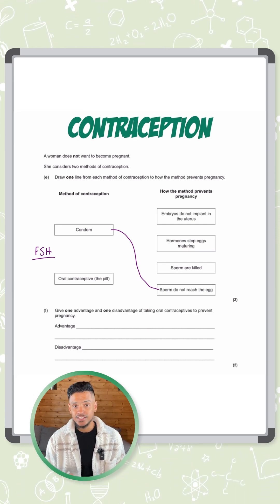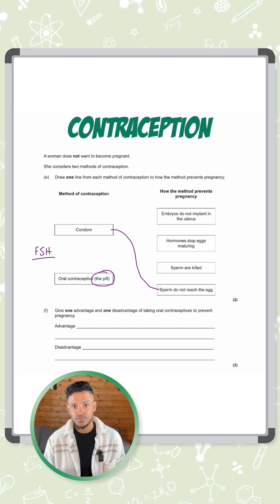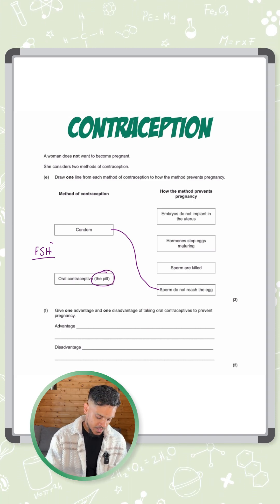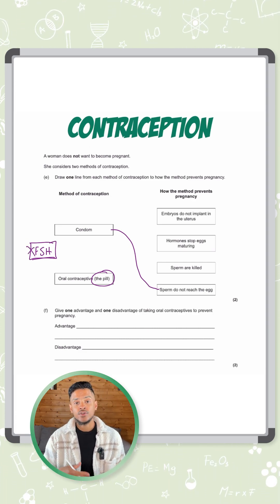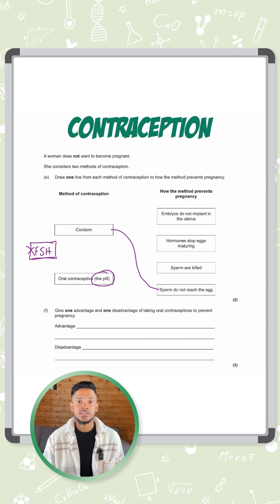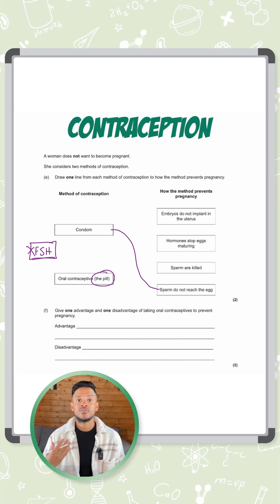But because the oestrogen in the pill causes the woman to have very high oestrogen levels it inhibits or it stops FSH from being released. And if you don't have FSH that means the egg is not going to mature and be released. So that's how you prevent the pregnancy.